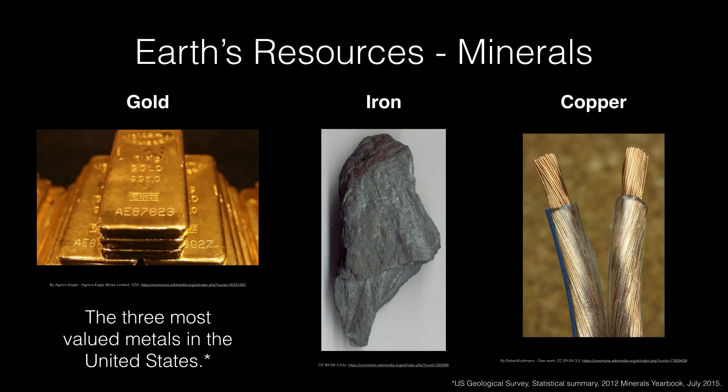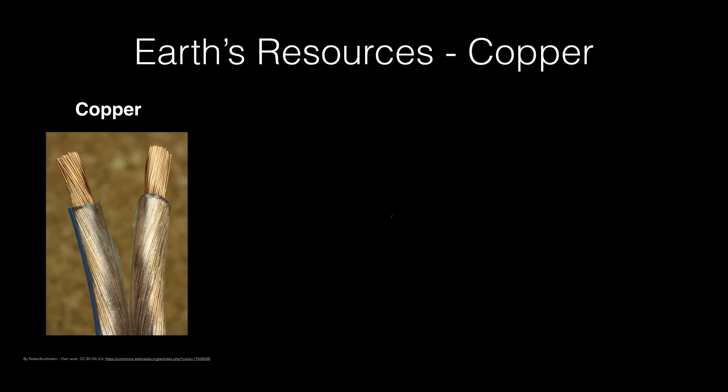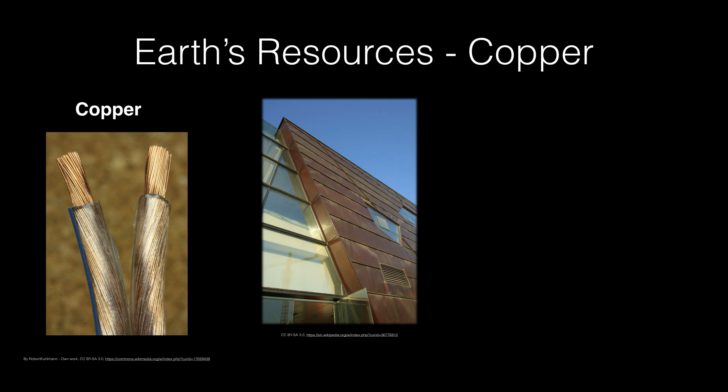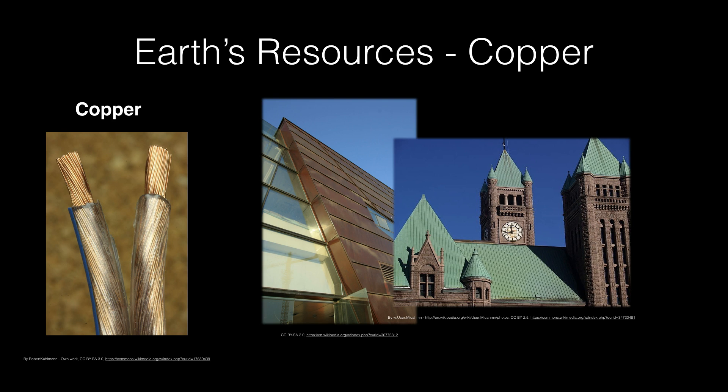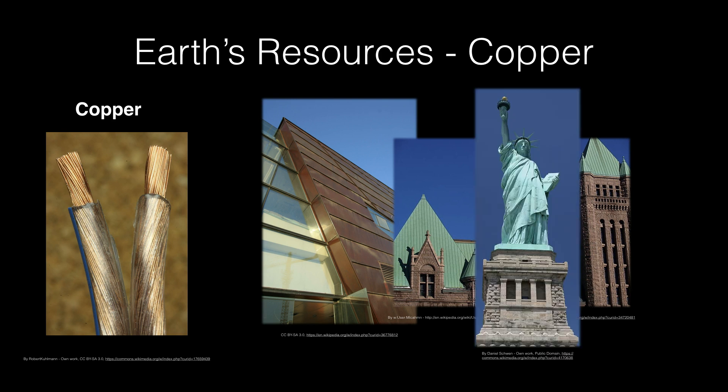Let's take a look at minerals. There are some very important metals we mine out of the ground, such as gold, iron, and copper — the three most highly valued metals in the United States. We're going to focus on copper. Like gold and iron, copper has been used for money, jewelry, and weapons in the past. Today, copper is used for infrastructure and in buildings for decoration, and over time that copper turns green, like you see on the roof of this building or on the Statue of Liberty.